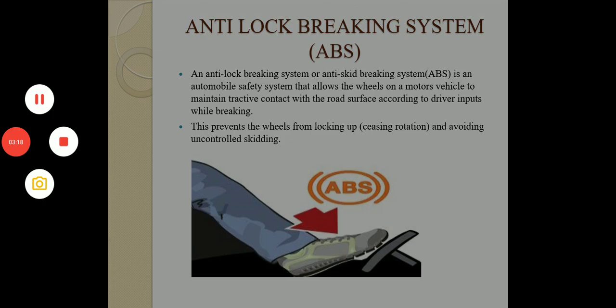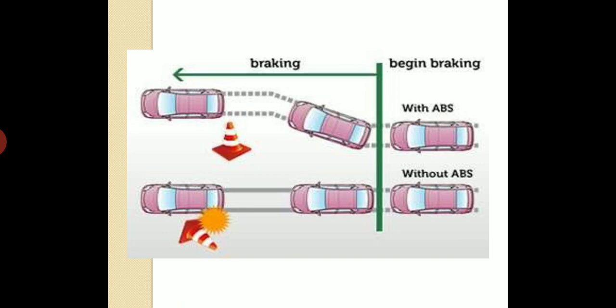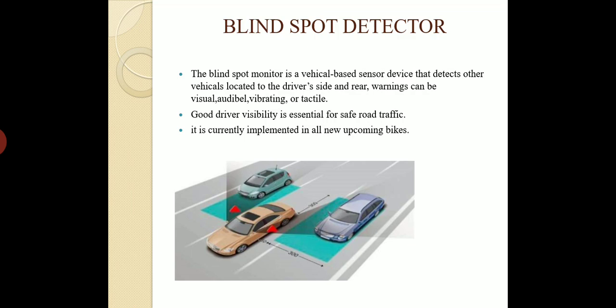Anti-lock braking system, ABS. The anti-lock braking system, or anti-skid braking system, is an automobile safety system that allows the wheels of a motor vehicle to maintain tractive contact with the road surface according to driver inputs while braking. This prevents the wheels from locking up and avoids uncontrollable skidding, as shown in the figure. With ABS versus without ABS: while going on a road and suddenly encountering road bumps, when the brake is applied, without ABS the vehicle skids, but with ABS, braking stops the vehicle quickly and safely.